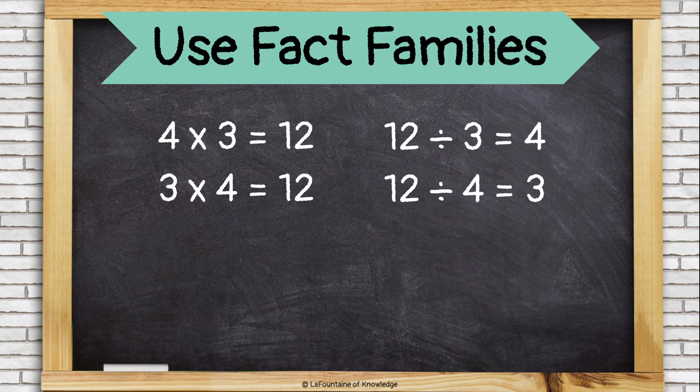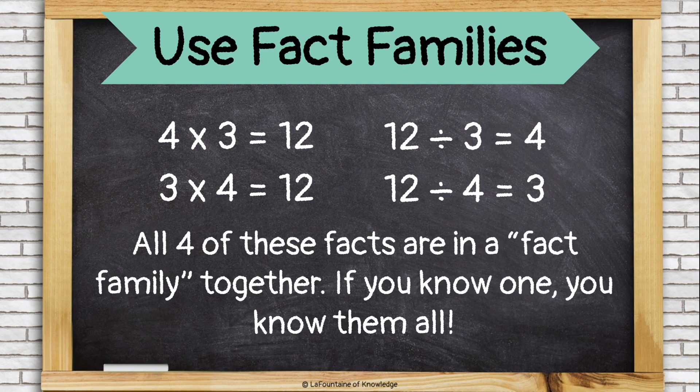Four times three equals twelve. Three times four equals twelve. Twelve divided by three equals four. Twelve divided by four equals three. All four of these facts are in a fact family together. If you know one, you know them all.